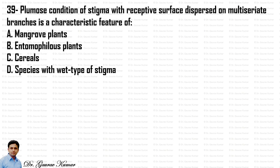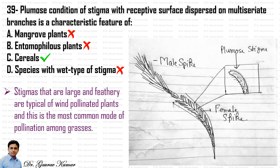The plumose condition of stigma with receptive surface dispersed on multiseriate branches is a characteristic feature of cereals. The stigmas that are large and feathery are typical of wind-pollinated plants, and this is the most common mode of pollination among grasses. The feathery or plumose stigma can be seen on the female spike.